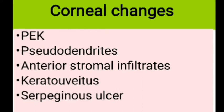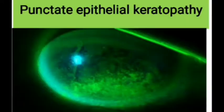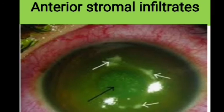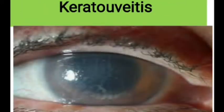Corneal manifestations include punctate epithelial keratitis, pseudodendrites, anterior stromal infiltrates, keratouveitis, and serpigenous ulcer. In punctate epithelial keratopathy there is blotchy swelling of epithelial cells — it is coarse, common in the periphery, multiple, raised, and stains with rose bengal. Pseudodendrites form when punctate epithelial lesions coalesce; they are broader and more plaque-like without central ulceration, distinguishing them from herpes simplex dendrites which do have central ulceration. Anterior stromal infiltrates are hazy granular dry infiltrates just under Bowman's membrane, representing stromal reaction to soluble viral antigen.